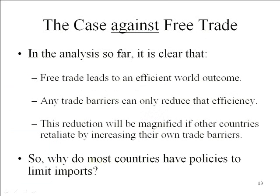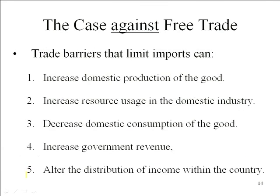We still have to come back to: if we can make the case that free trade is so wonderful, how come very few countries actually pursue free trade? One of the reasons might be because economic efficiency is not the overriding goal of the government. The arguments for free trade give us greater economic efficiency, but if economic efficiency is not your goal, that may not be enough to prevent you from implementing some sort of trade policy. A number of arguments for trade policies recognize that a trade barrier can: limit imports and increase domestic production, increase domestic resource usage, decrease domestic consumption, increase government revenue, and change the allocation or distribution of income.